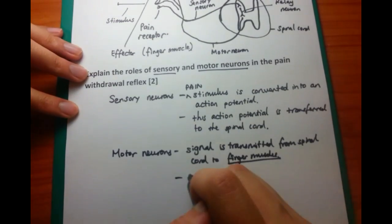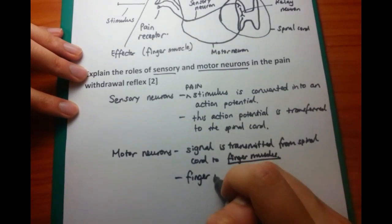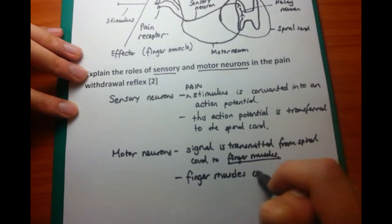The second point being that these finger muscles then contract, and the contraction causes the finger to jerk back, and then causes you to move away from the stimulus.